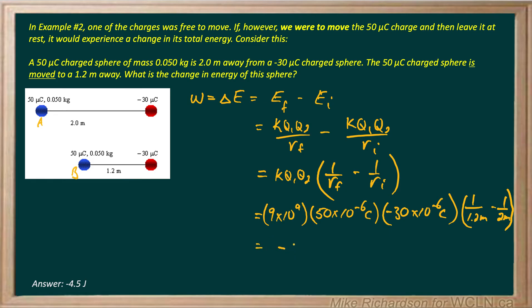Cranking all that out in the calculator, you end up getting negative 4.5 joules. So the work required, or the change in energy going from A to B, is negative 4.5 joules. We know from previous units that when you get a negative value of work, that simply means you lost energy — it had more energy in location A than it did in location B.